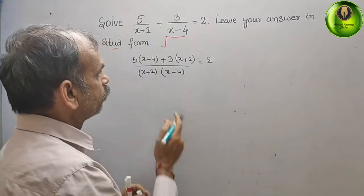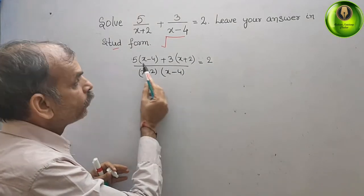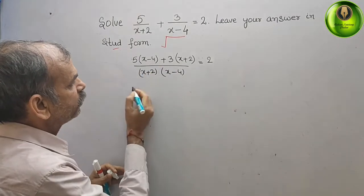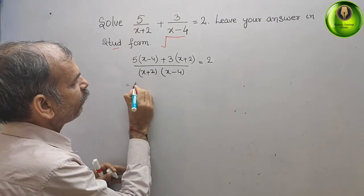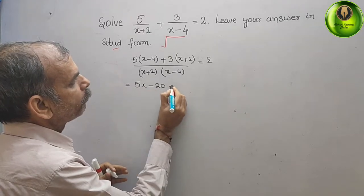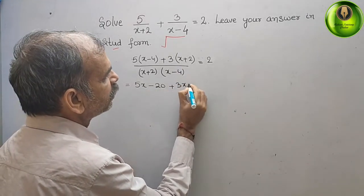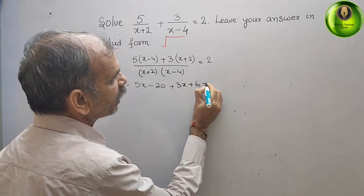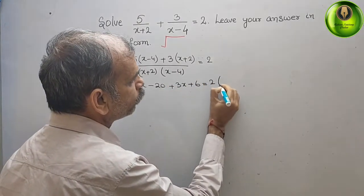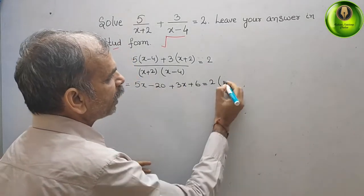Now what we have to do is multiply and cross-multiply. This gives us 5x - 20 + 3x + 6 on the left side, equal to 2 times (x+2)(x-4). Expanding that product gives x².